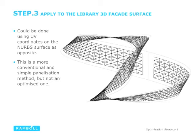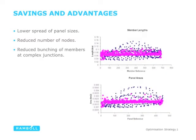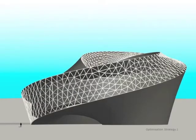Step three is to apply this to the actual facade itself. This shows the facade split into an equal number of panels using conventional UV coordinates — not an optimized approach. Our optimized version using the repulsion algorithm is significantly more effective, with a standard deviation of panel size of 1.464 compared to 2.245 for the NURBS approach. We think this has great potential.